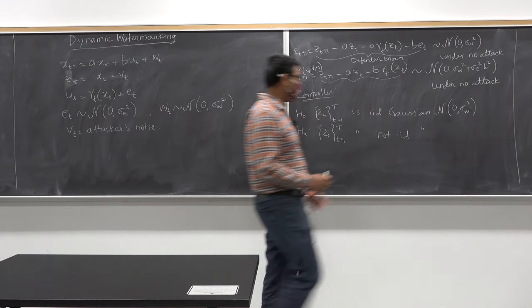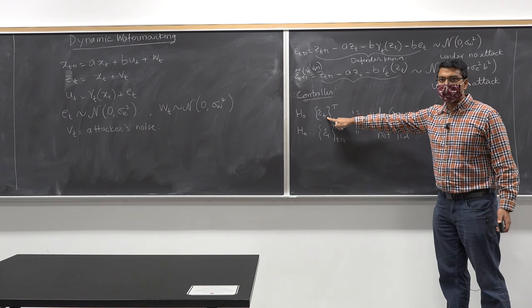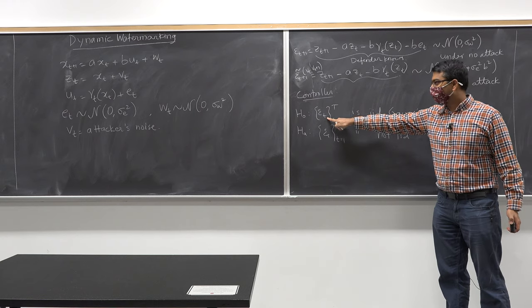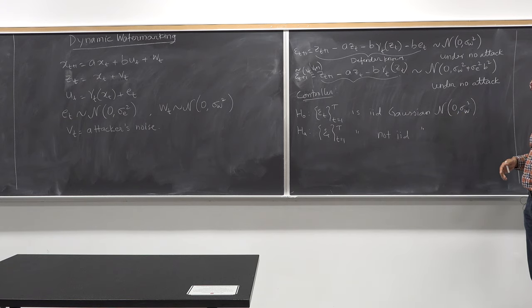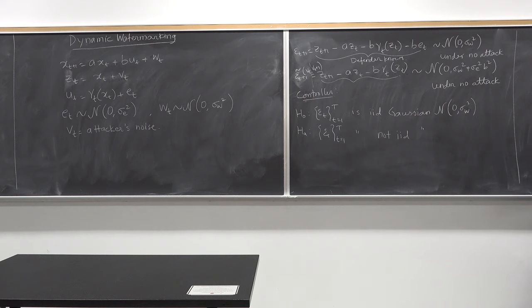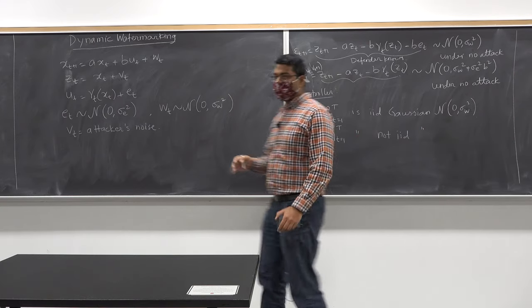One idea is to compute the empirical mean and the empirical variance of this random variable — we have seen those expressions before in class — and then check whether they lie within some bound or not. If they lie outside the bound, raise an alarm. If within the bound, things look okay. That's certainly one thing that's doable.